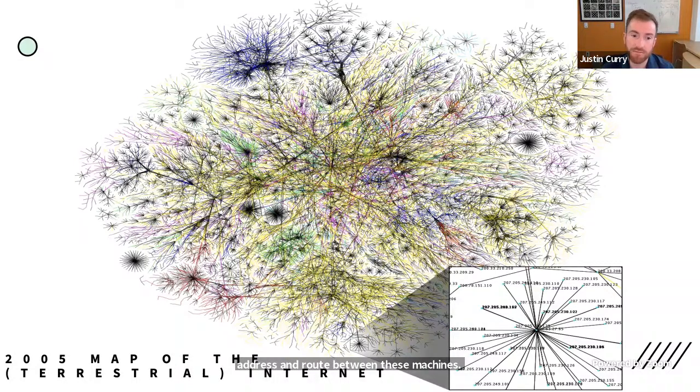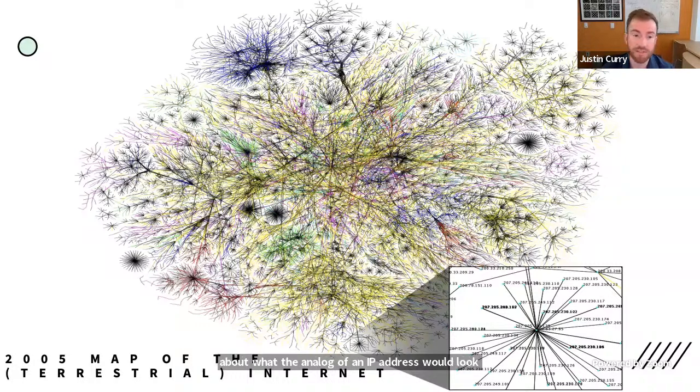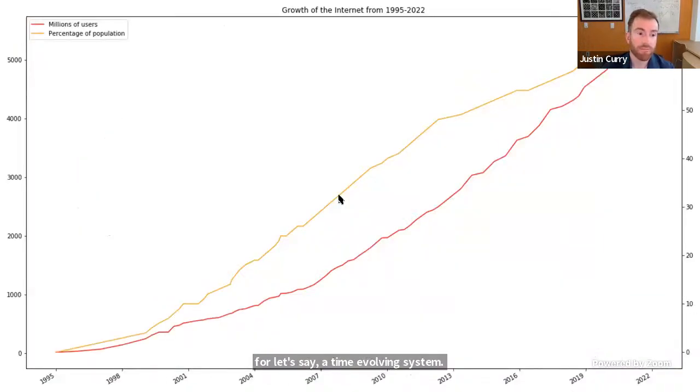So, you know, the fact that we have an IP address where, you know, the first few digits are fixed amongst common ancestors, but then as you have to go higher and higher up in the network, that's when you start changing those values. So the actual network topology ended up being reflected in the sort of name topology for how you address and route between these machines. So I just mentioned this because I want you to think about what the analog of an IP address would look like for a time evolving system and how that affects the topology on your namespace.